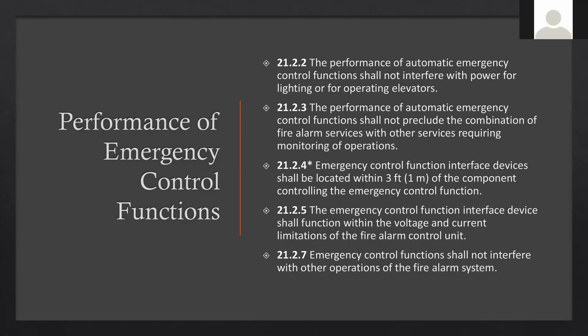Question: what happens if your shunt trip is in a different place from your relay location for the elevator? Answer: that shunt trip relay needs to be moved within three feet of what it's controlling. If you have your primary, alternate, and cab hat over beside your elevator controller, then your shunt trip relay needs to be within three feet of the actual shunt trip — the arm that throws in the room to cut the power.